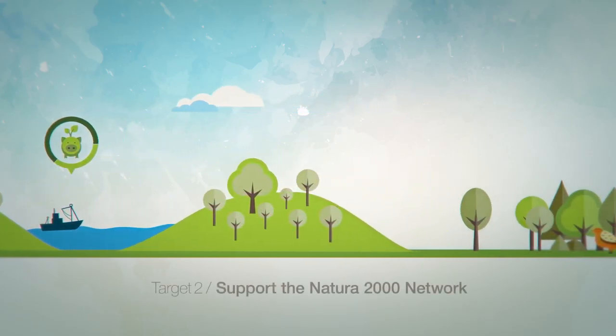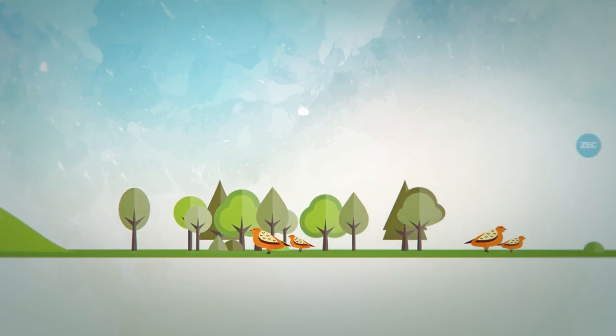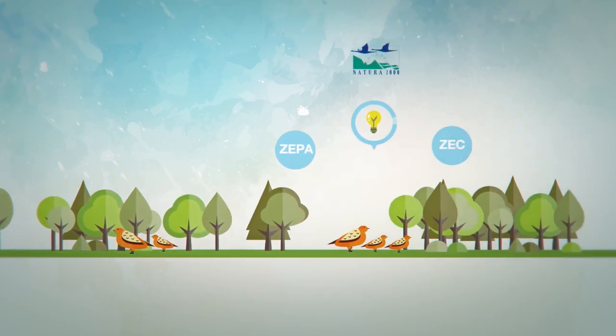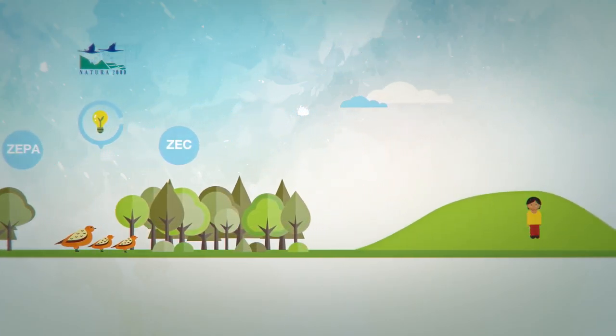Target 2 concentrates on implementing the Natura 2000 network. The aim is to ensure effective management of the protected areas and to support the Natura 2000 network as a tool of opportunity.